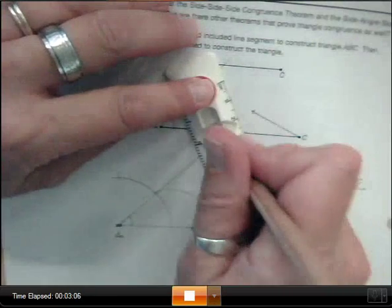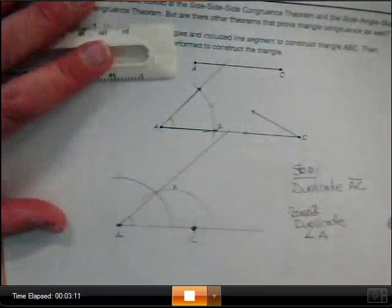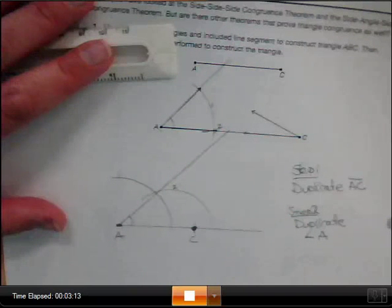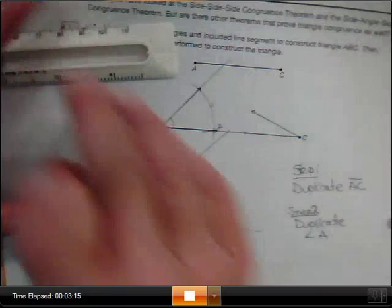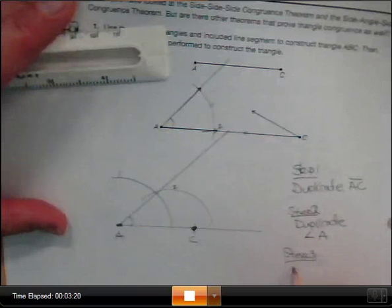So that angle is going to be congruent to this angle. I'm going to go ahead and mark this so that maybe when you're looking at it, this arc and this arc are the same. Now what do you suppose step three is? Right, we need to duplicate angle C.